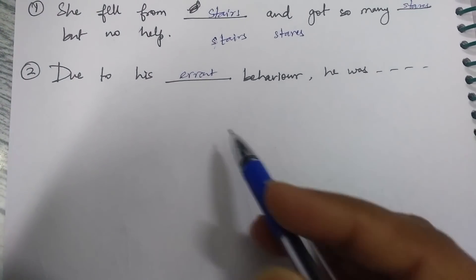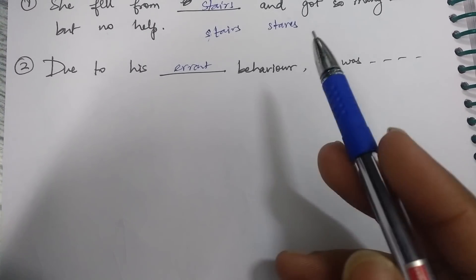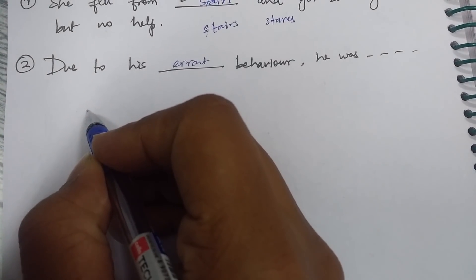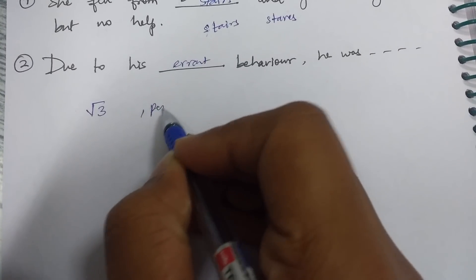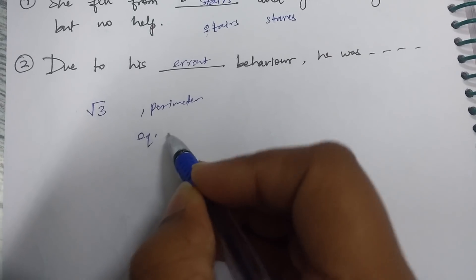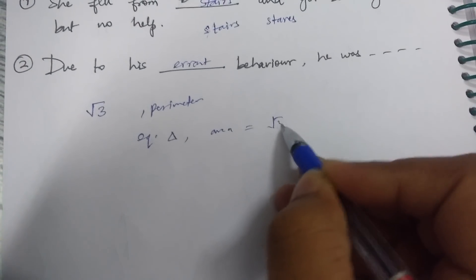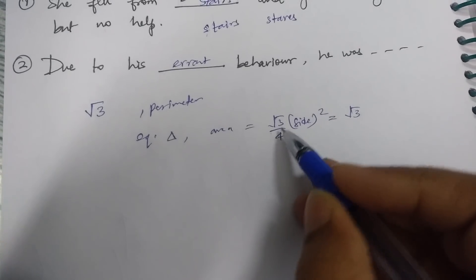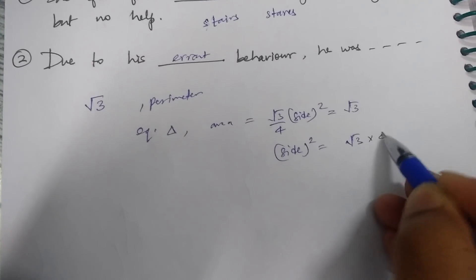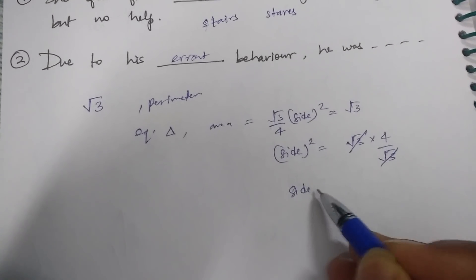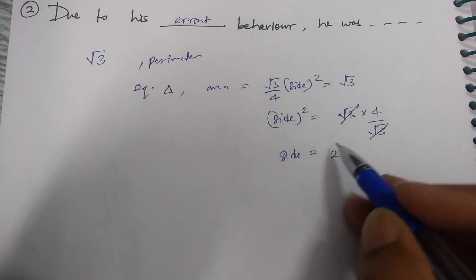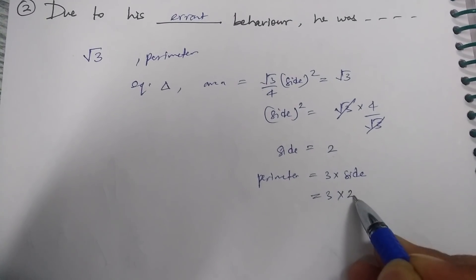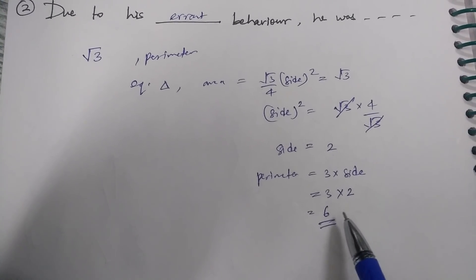The third question I also solved in my previous video: a triangle is given with area equal to root three, and you have to find the perimeter. For an equilateral triangle, area equals (√3/4) × side². Setting this equal to √3, side² = 4, so side = 2. The perimeter is 3 × side = 3 × 2 = 6. The correct answer was 6.